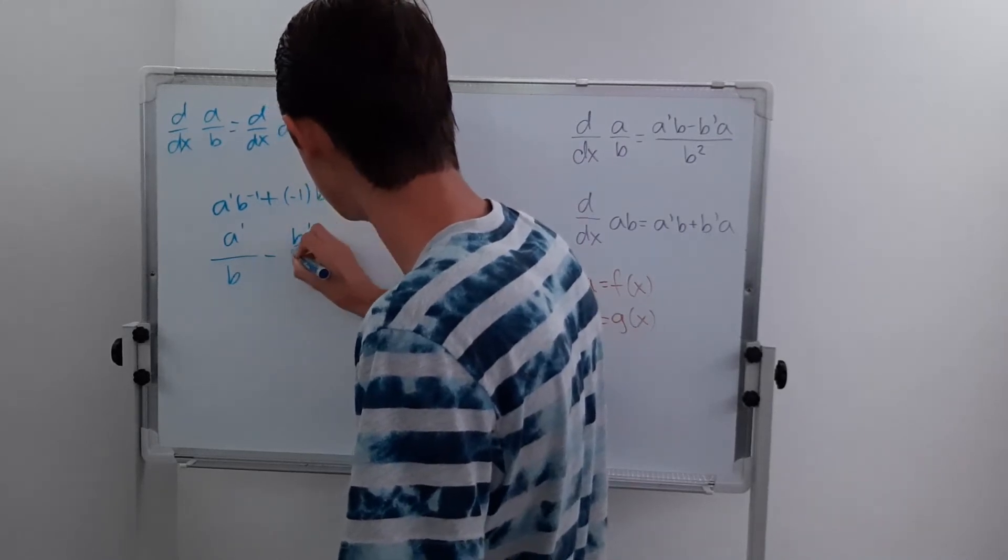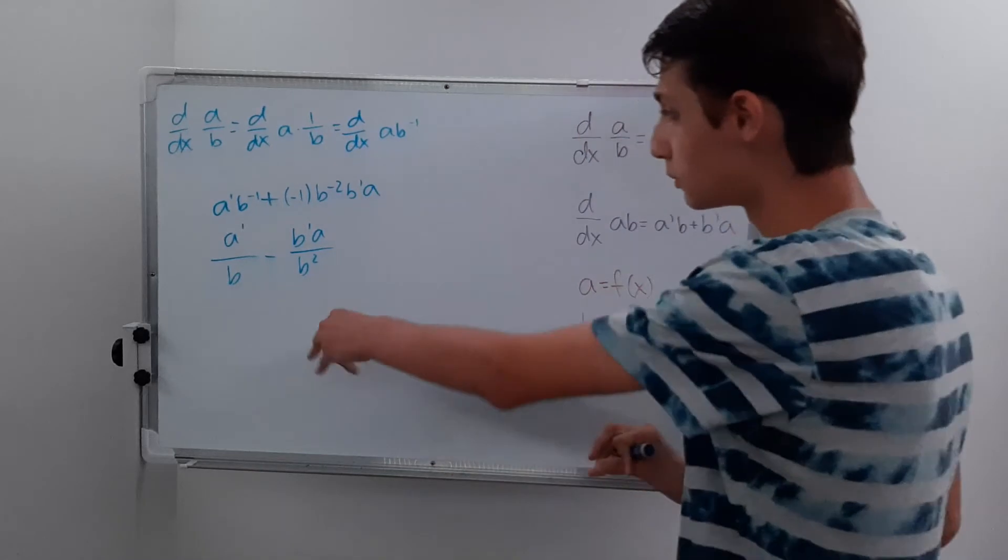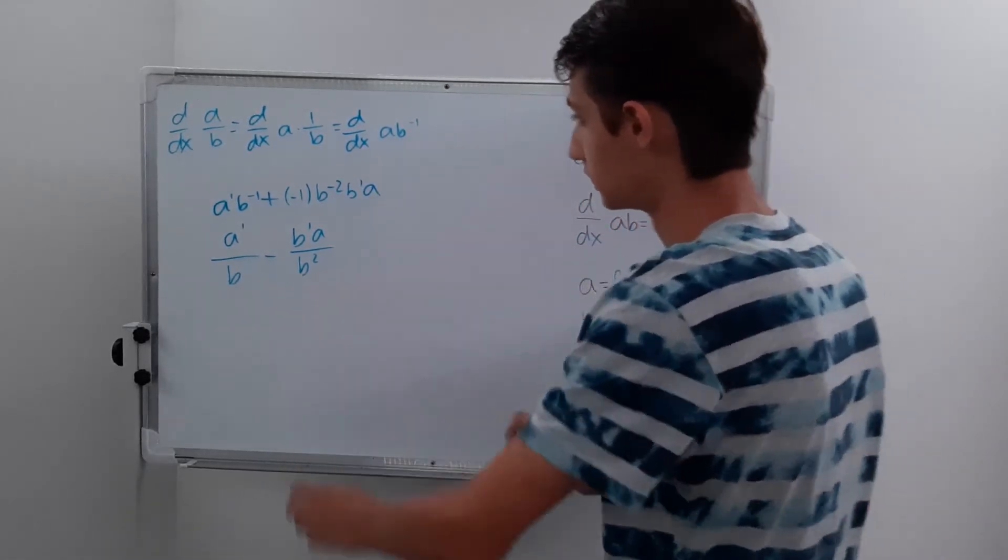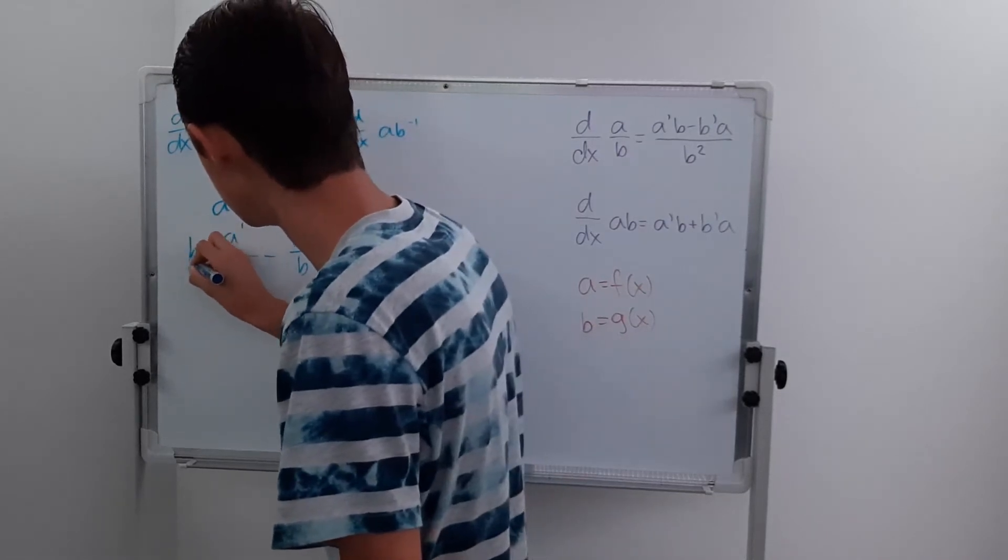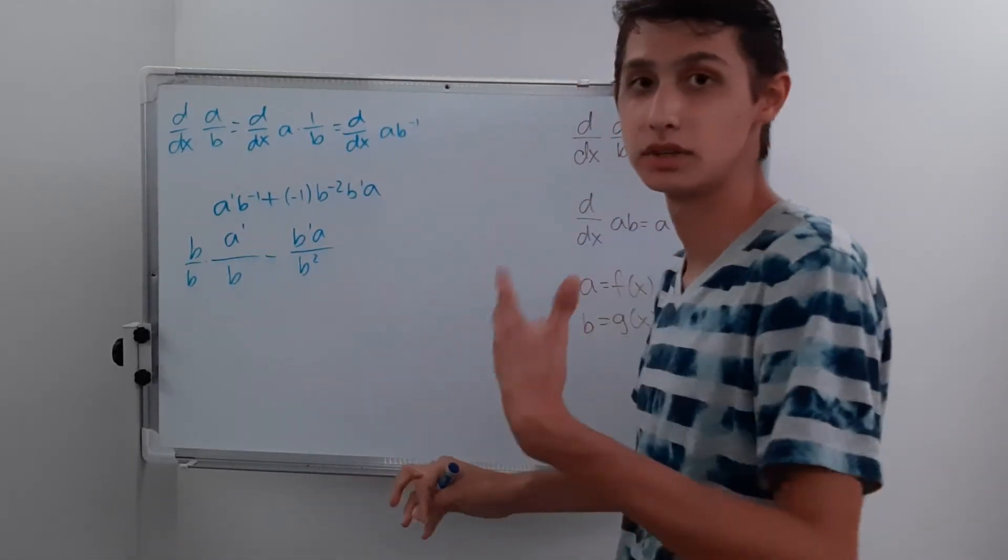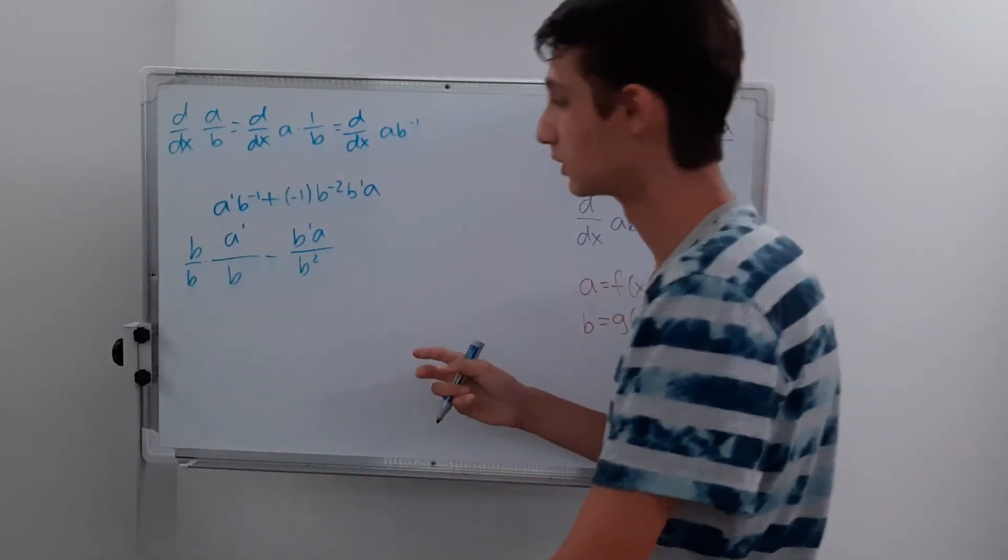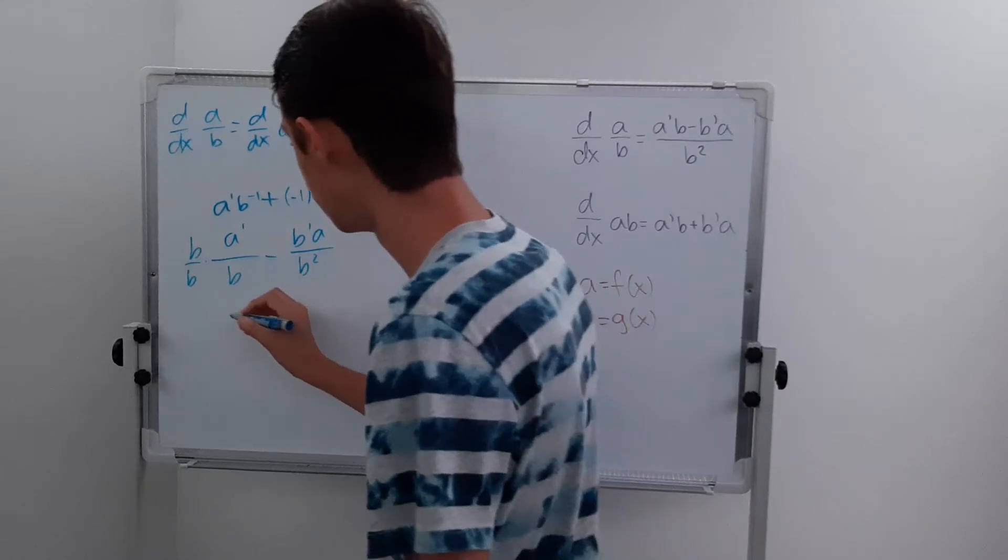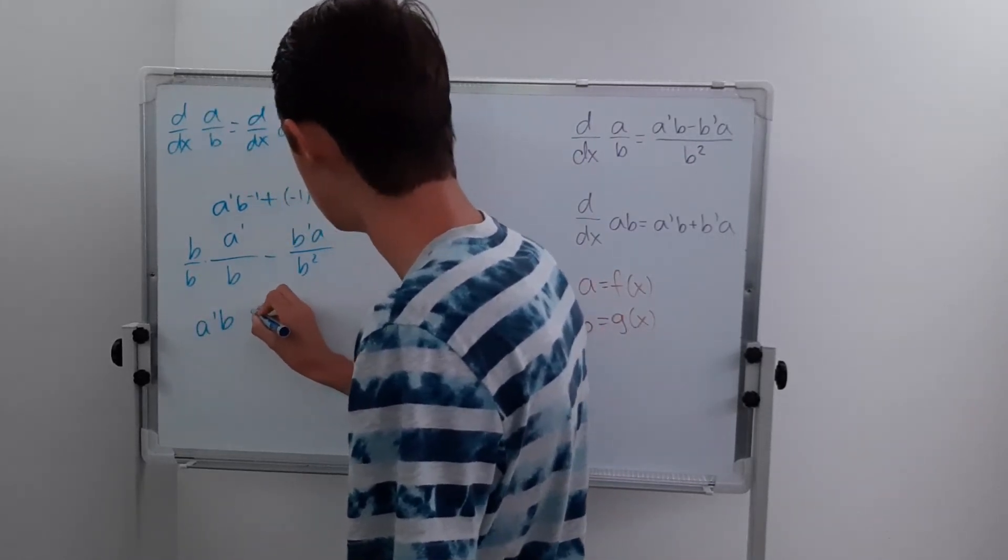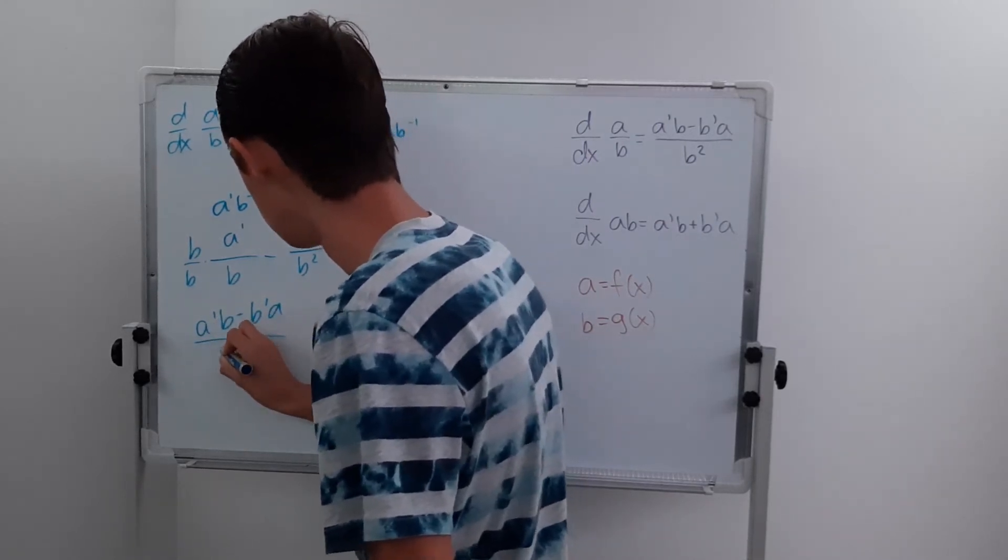And if we want to put this over the common denominator here, we can multiply this term by b over b, which turns out to just be 1. So this turns into a prime b minus b prime a all over b squared.